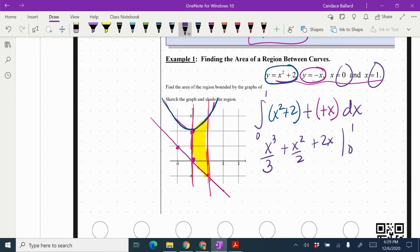I'm going to go ahead and plug my 0 and my 1 in. So when I plug 1 cubed in, I get 1 third. When I plug 1 squared in, I get 1 half. And when I plug the 1 into 2x, I just get 2. I subtract. Whenever I plug the 0 in, I get 0.